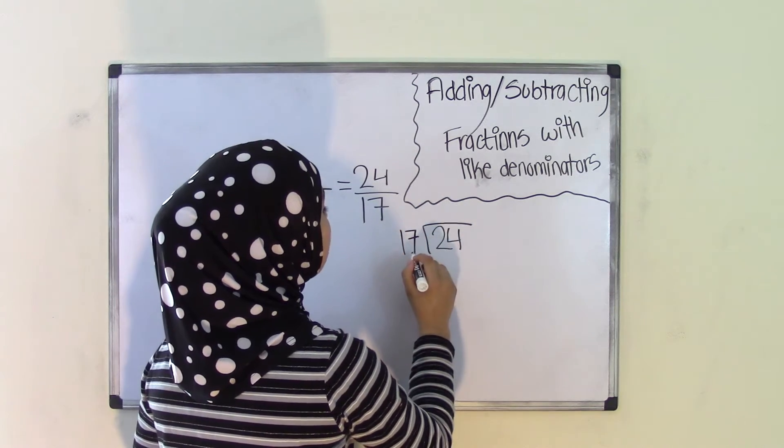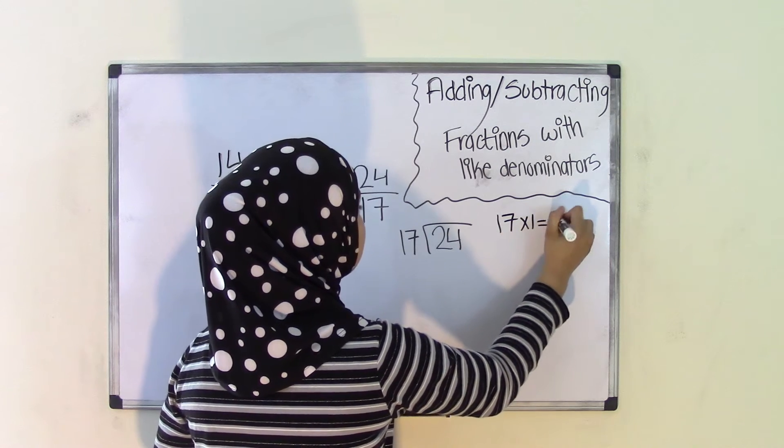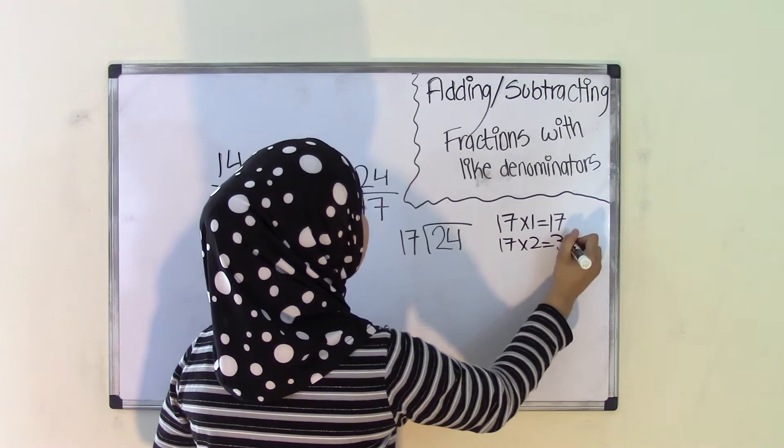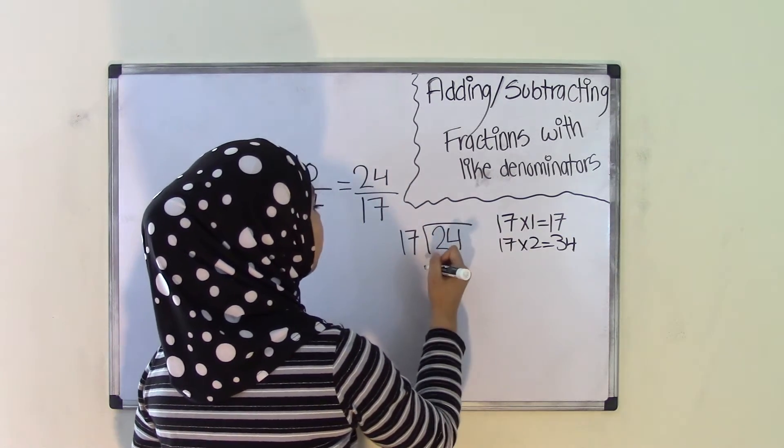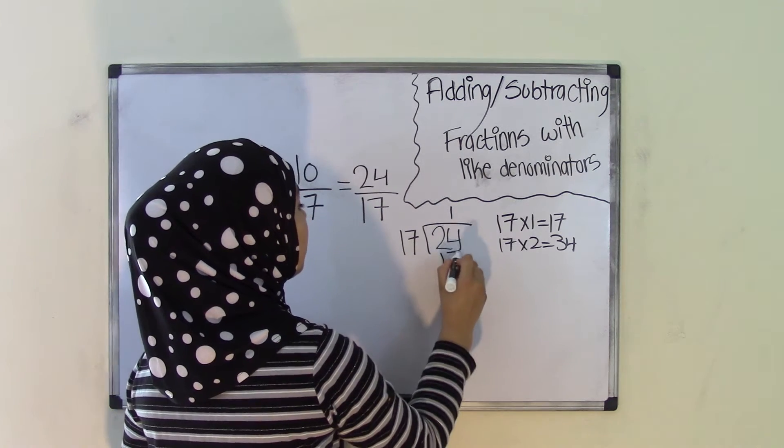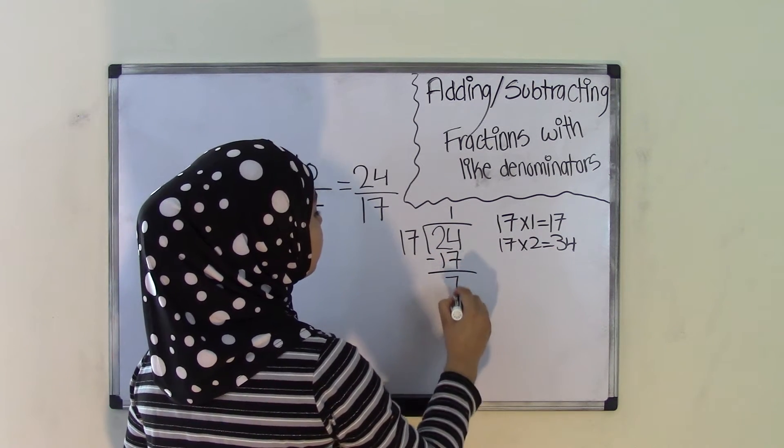So how many times does 17 go into 24? Let's find out. 17 times 1 is 17. 17 times 2 is 34. 34 is greater than 24, so we're going to have to go with the previous product of 17 times 1 is 17. And you get a remainder of 7.